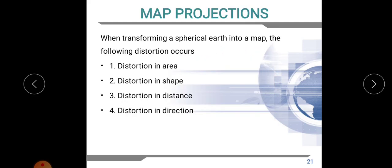When transforming a spherical earth into a map, the following distortions occur. When we are transforming our three-dimensional earth into a two-dimensional map, we cannot produce it in a perfect manner — there will always be distortion. Distortion will occur in area, shape, distance, or direction. Any kind of distortion will occur for any type of map projection during the transformation of earth into a map.